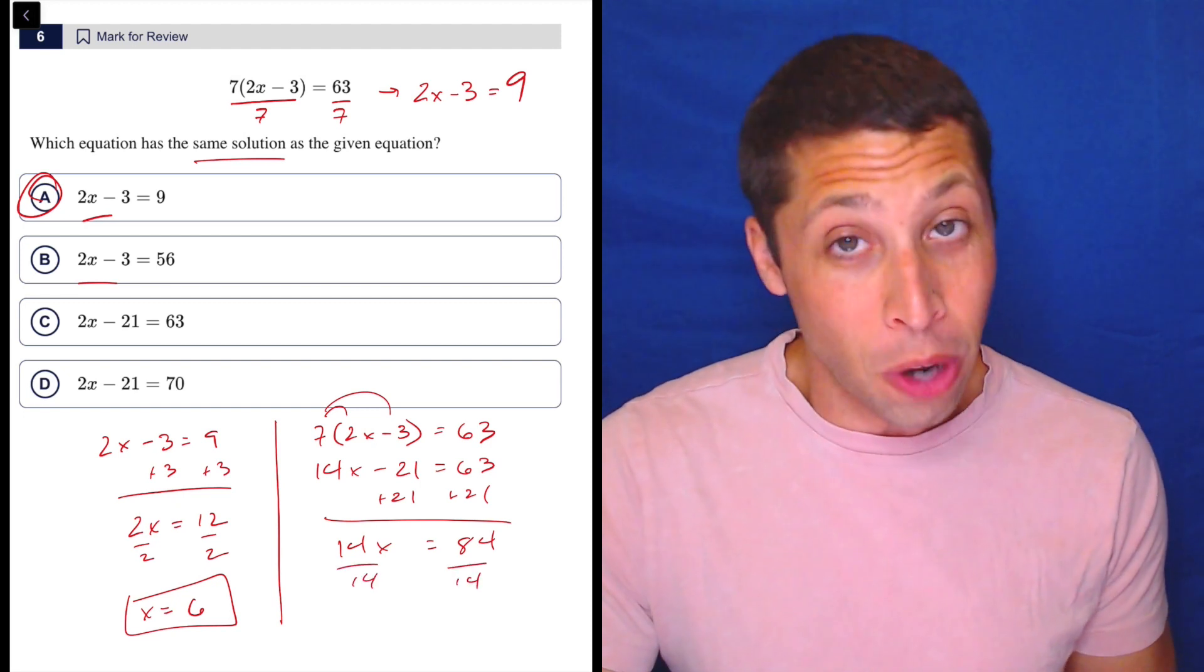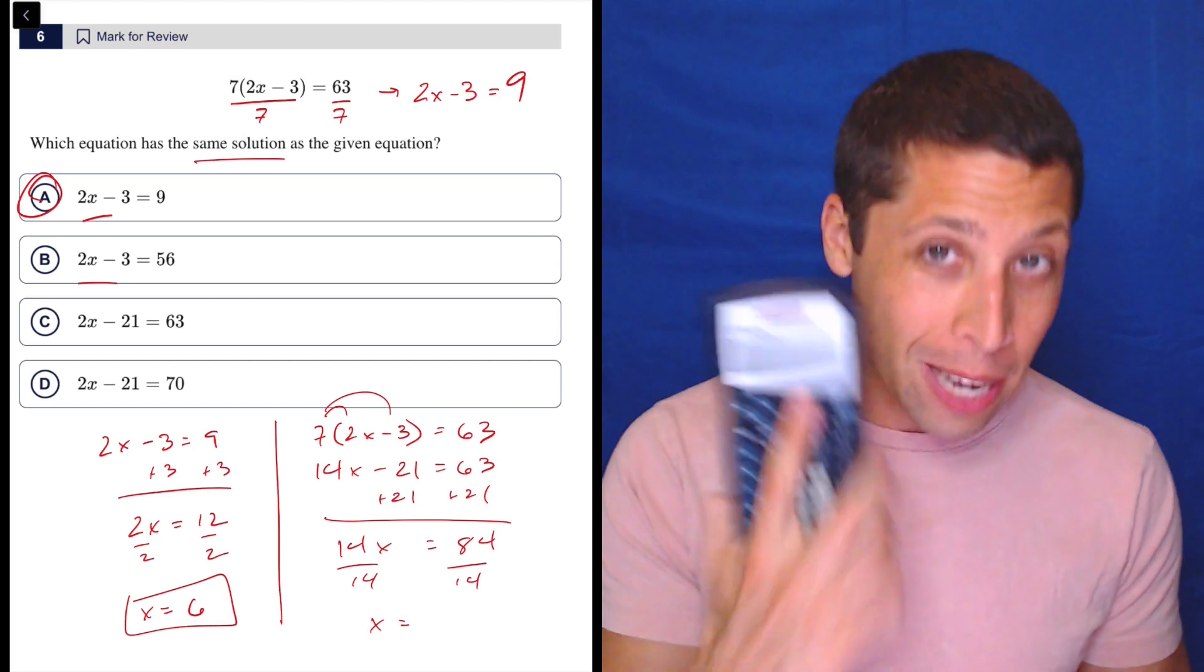You add 21 to both sides, you get 14x is equal to 84. And now you've got to reach for that calculator because do you know your 14 times tables? I certainly don't. So I know the answer already, but I'm going to do it anyway. So 84 divided by 14 is 6. So they literally have the same solution.